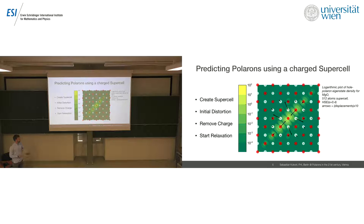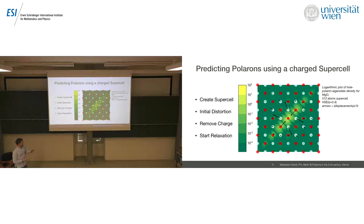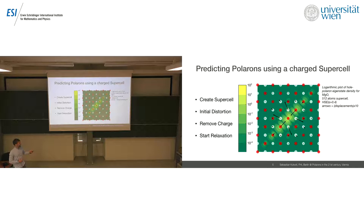Coming back to the charge supercell approach: create a supercell, add initial distortion, remove charge, start relaxation, and if you're lucky you will maybe find a polaron. I've shown here for magnesium oxide using the HSE functional - I will come back to technical details in a few minutes - using a 512-atom supercell, where the black arrows show the displacement times 10. What you can see is a logarithmic plot of the polaron eigenstate, showing a strongly localized charge on the central oxygen atom. This is a hole polaron because we removed the charge, but you can also see some tails on the other atoms.